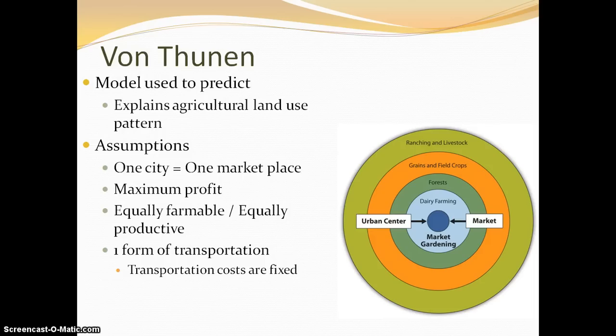Now one thing that's important to note about models in general: models are never 100% accurate and they never describe 100% accurately the real world. They theorize and they generalize about the real world, because you have to create perfect conditions — you have to create assumptions for models. But a lot of times, with the model and with the theory, they'll help to explain a lot and they'll help to create good predictive patterns for why things are spatially arranged the way they are.